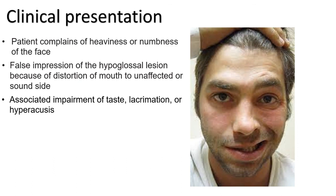Because the stapedius muscle is supplied by a branch of the facial nerve, which leaves the nerve in the facial canal proximal to the corda tympani, there may be paralysis of all muscles supplied by the affected nerve — complete palsy — or variable weakness in different muscles — incomplete palsy.